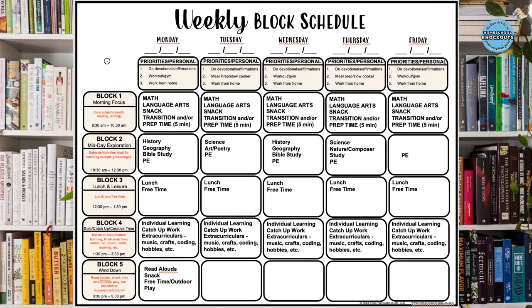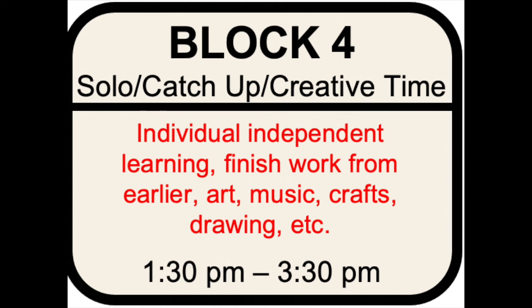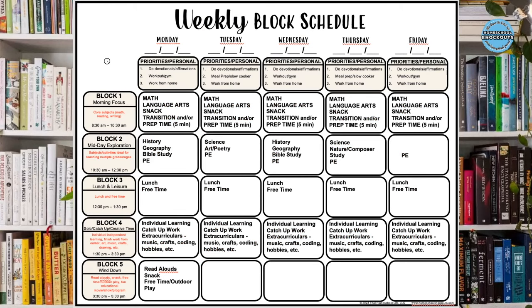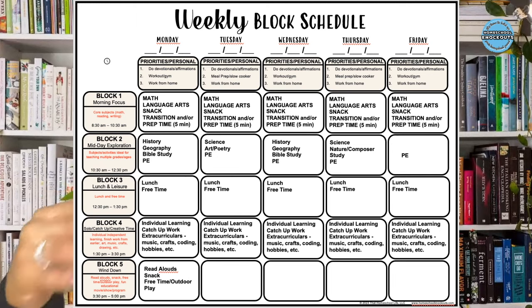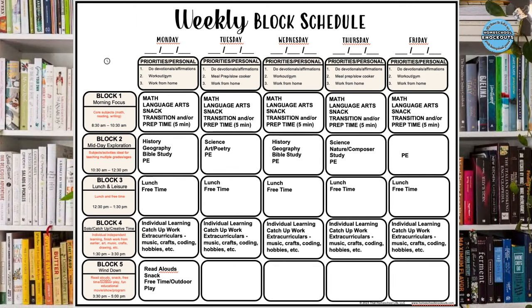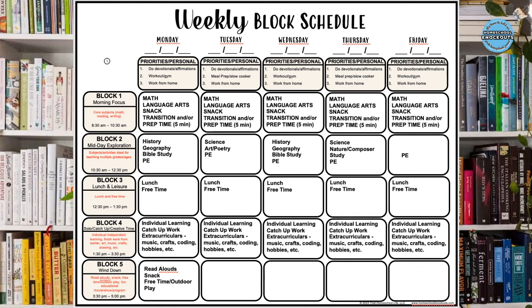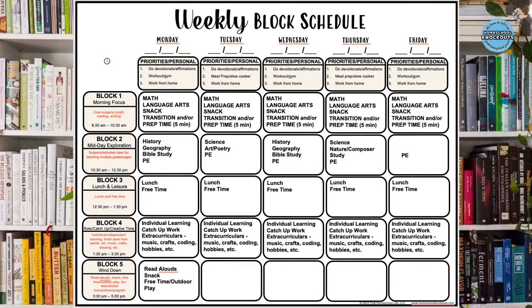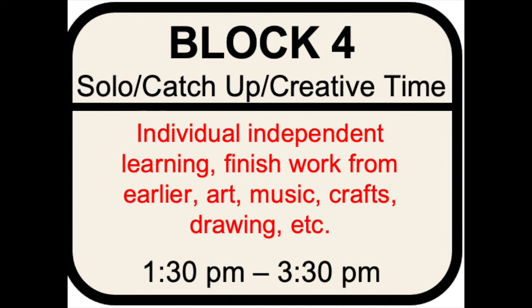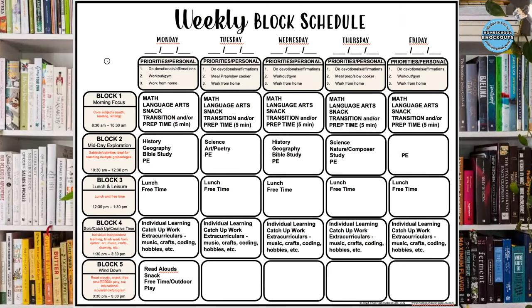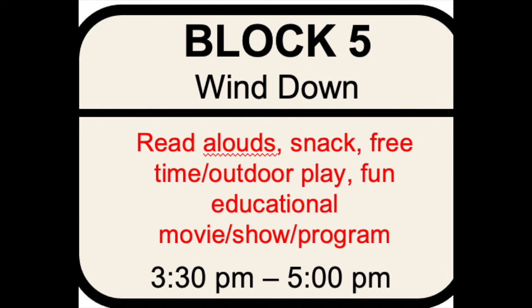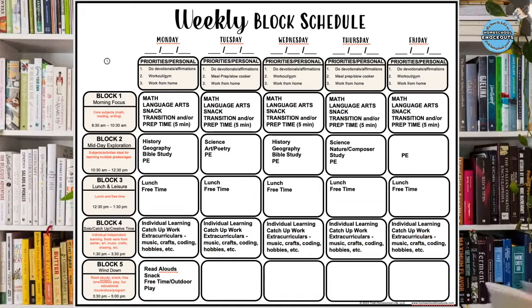Block four is our individual learning time or catch-up time, especially good for older kids. You can work with your younger kids during this time while your older kids get their work done, or vice versa. Good examples: individual learning, catch-up work, extracurriculars. Block five is how to wind down your day — a read aloud, snack, free time, outdoors, playing.